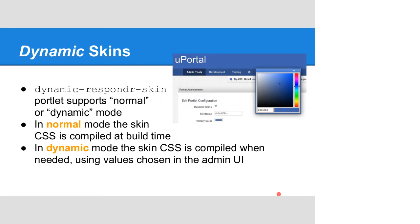Dynamic skins allow tenants to have their own brand colors and skin in the portal. A tenant administrator can access the skin controls and use an HTML color picker to specify a primary color RGB value, ask the server to recompile the skin for that tenancy, and the portal immediately reflects the correct colors to match the tenancy's logo.